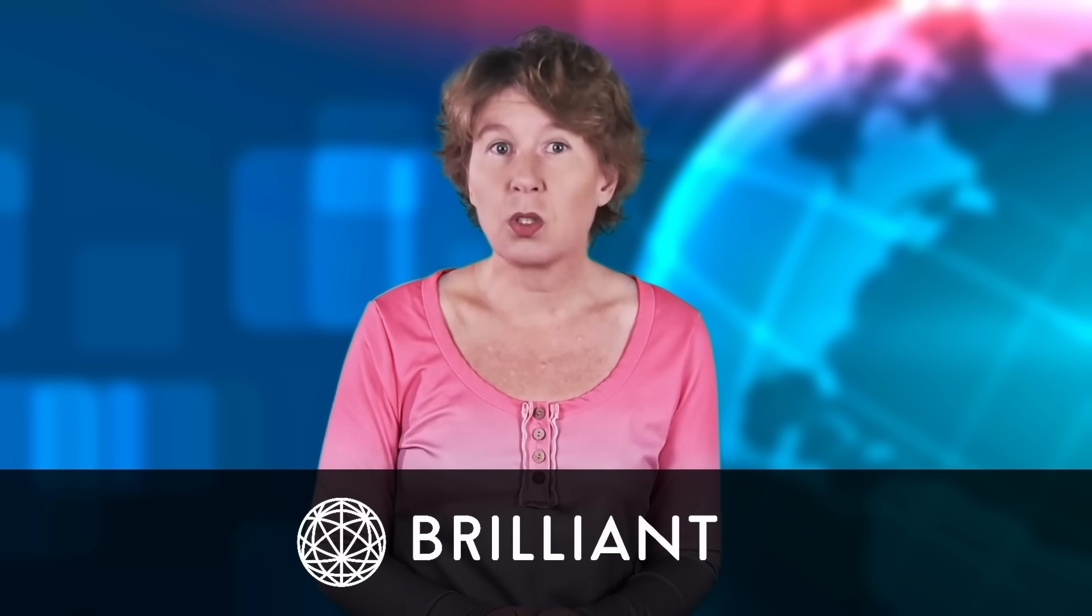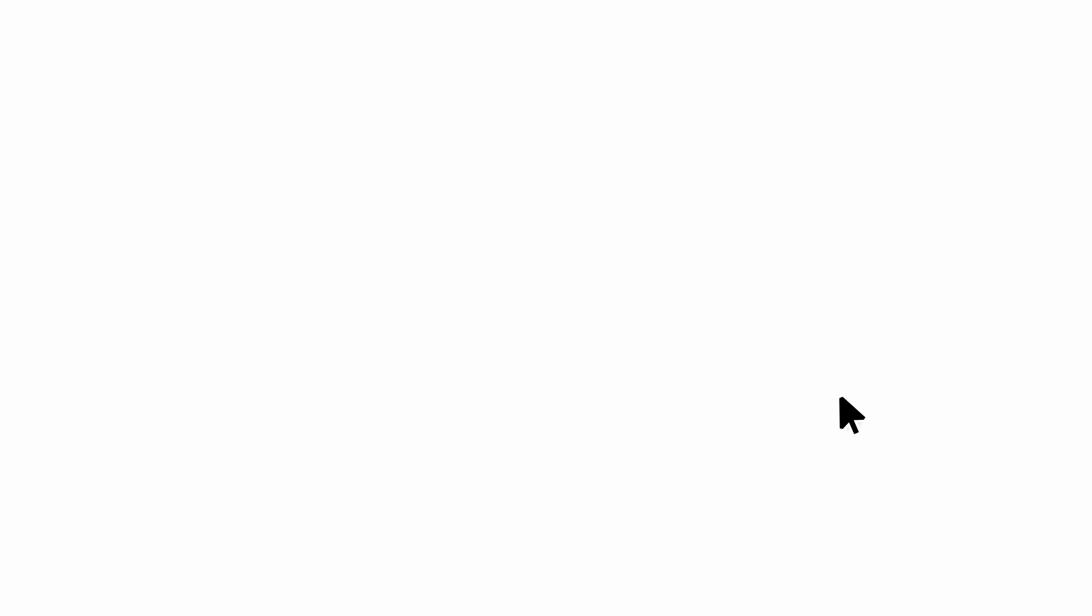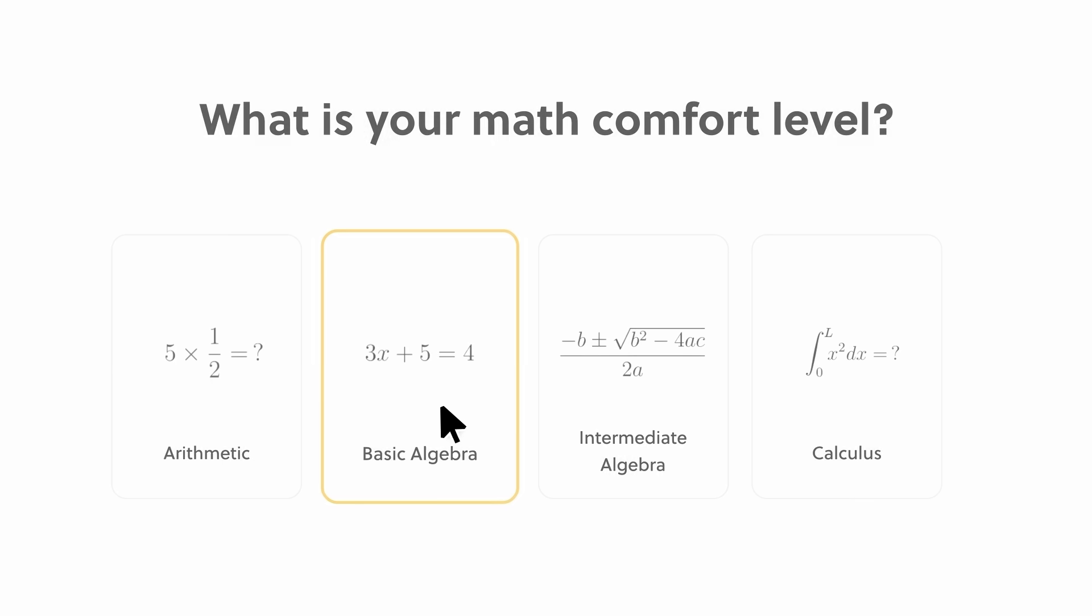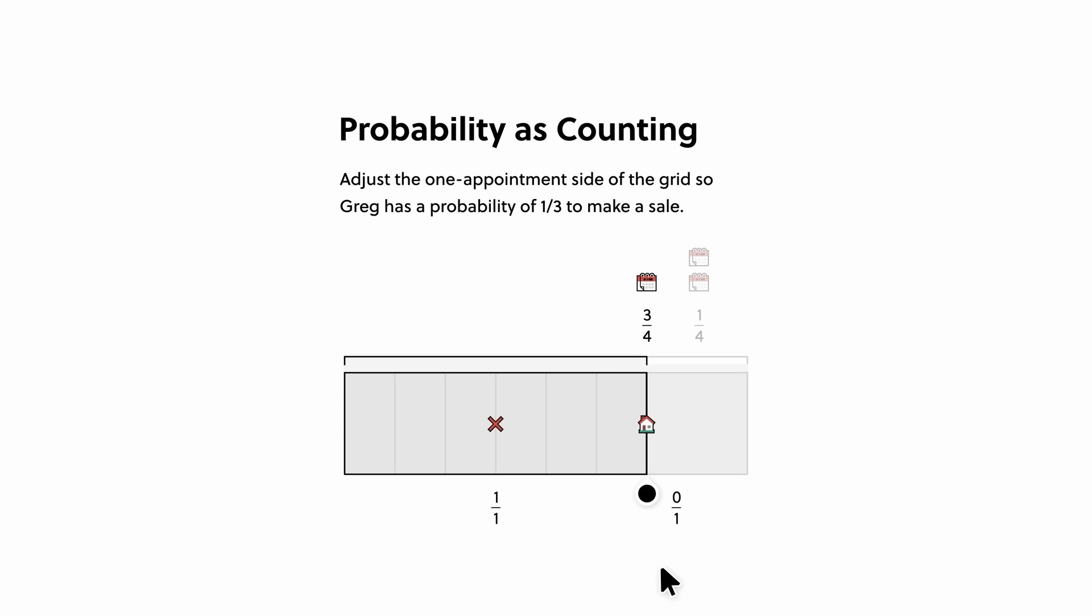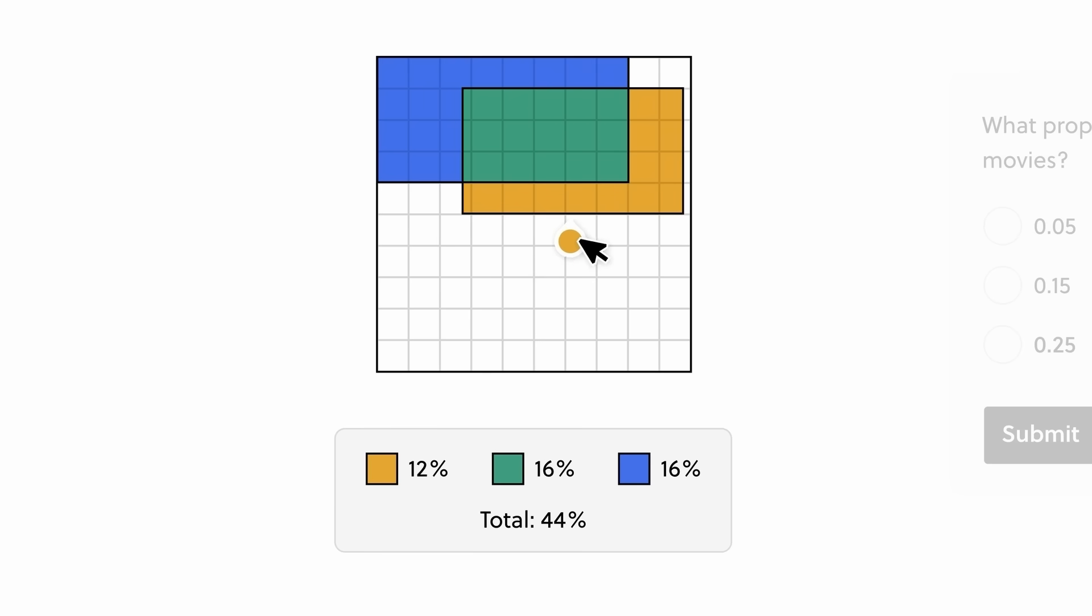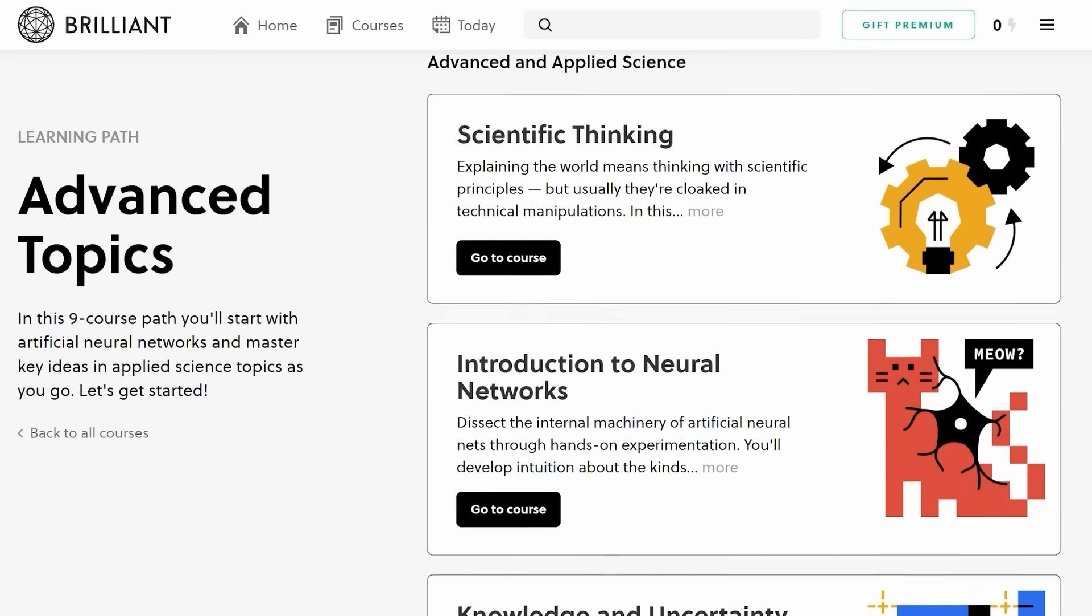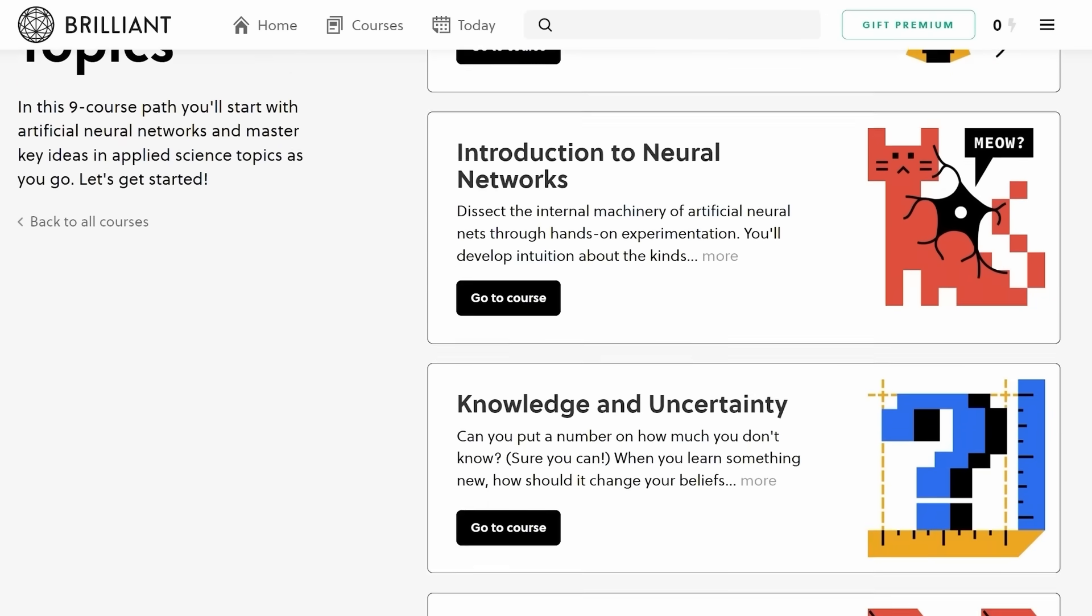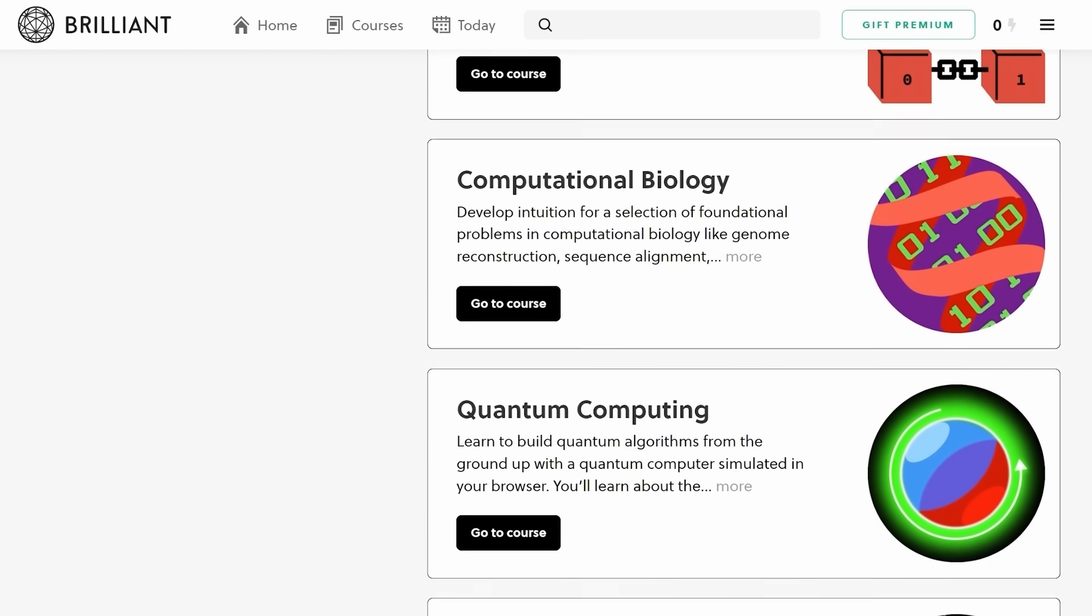Knowledge is power. I really believe that. And there's no better place to grow your knowledge than Brilliant.org. Whether you're into coding, maths, science, or just want to level up your problem-solving skills, Brilliant's interactive courses make learning really fun and engaging. I've been digging their probability course recently, and that made me fully realize how much of this stuff I'd completely forgotten. Whether you want to know more about solar panels, neural networks, astrophysics, special relativity or computational biology, Brilliant has you covered.